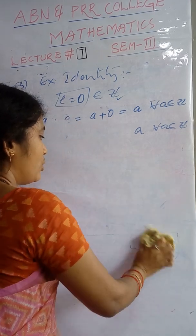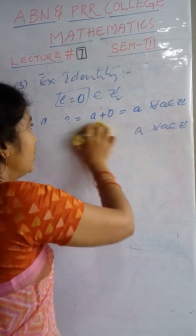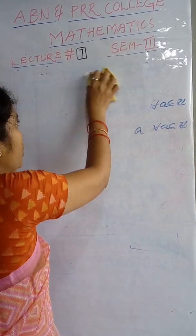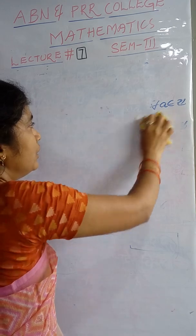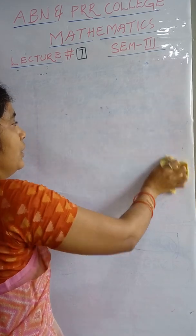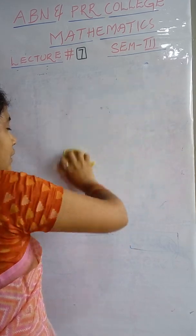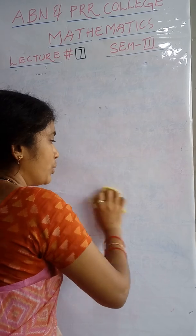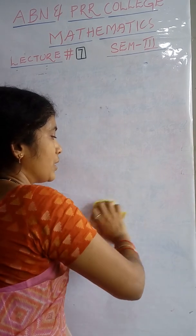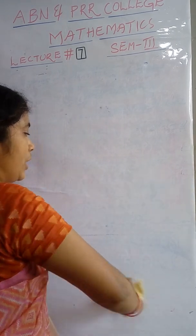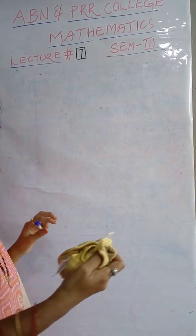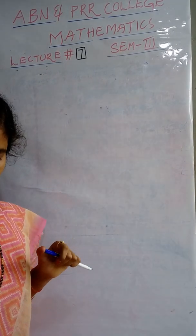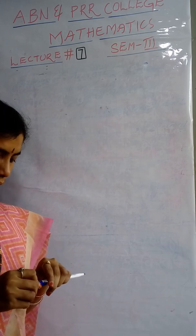The next problem is to show that the set of even integers forms a group under usual addition.